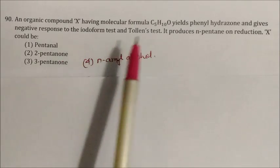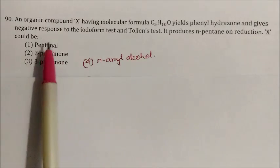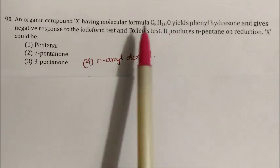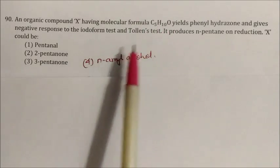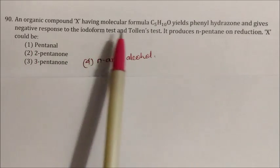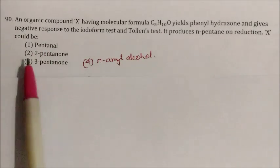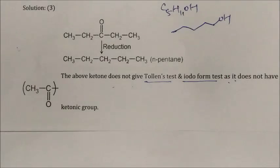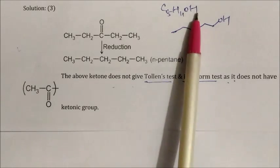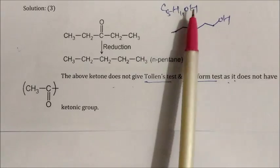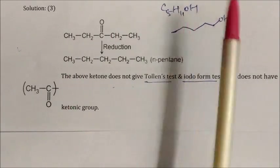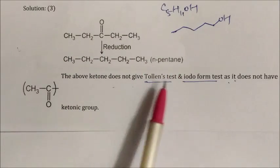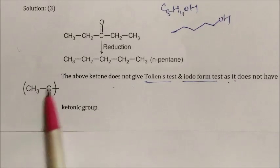Question: An organic compound X has molecular formula C5H10O, yields phenylhydrazone, gives negative response to iodoform test and Tollens test, and produces n-pentane on reduction. What is X? C5H10O with these properties — negative iodoform test rules out methyl ketones (no CH3CO group), negative Tollens test rules out aldehydes. 3-pentanone fits: it has no CH3CO group and on reduction gives n-pentane. Answer: 3-pentanone.